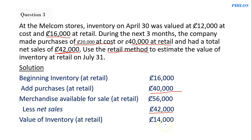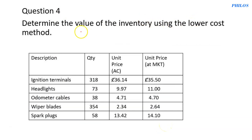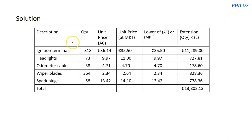Question four: determine the value of inventory using the lower cost method. We have the description of items, their quantities, unit price at cost, and unit price at market value. I draw a new column and write 'lower of cost or market value.' I compare the cost and market value — the lower one is what I write down. 35.5 is lower, so write it down; 9.97 is lower, write it; 4.70 is lower, write it.